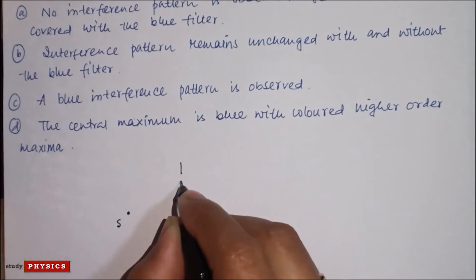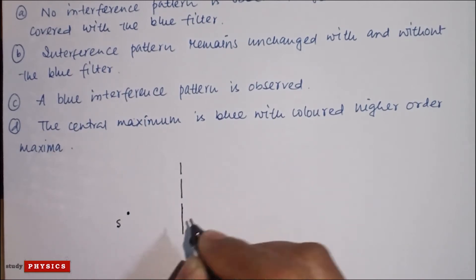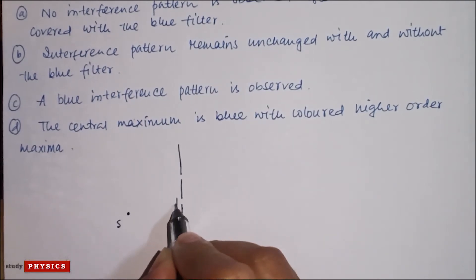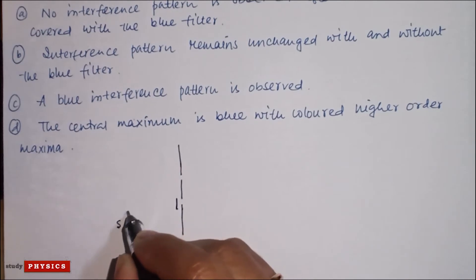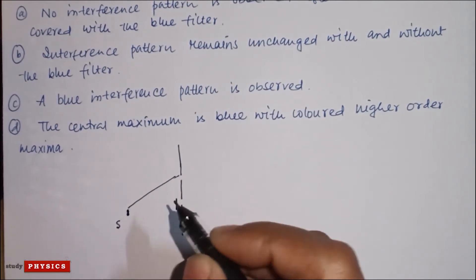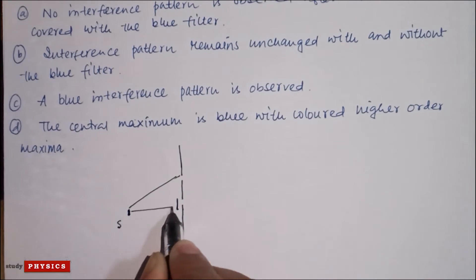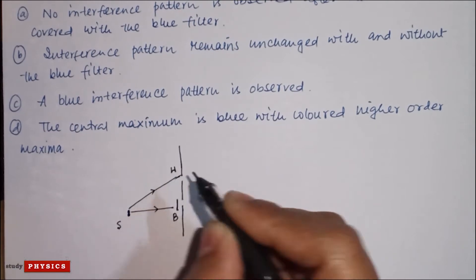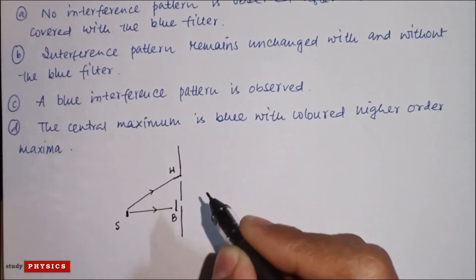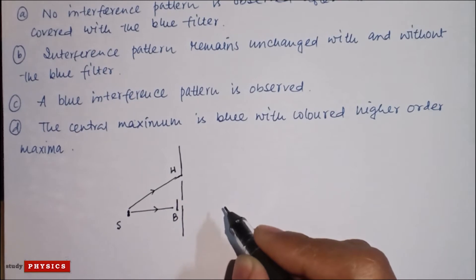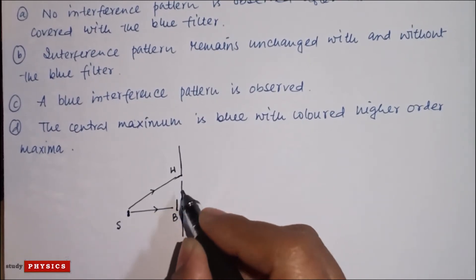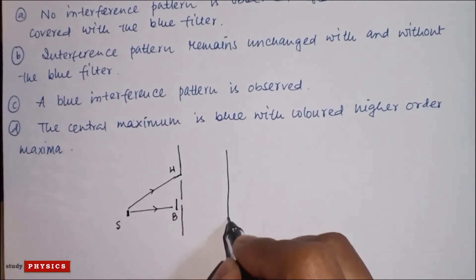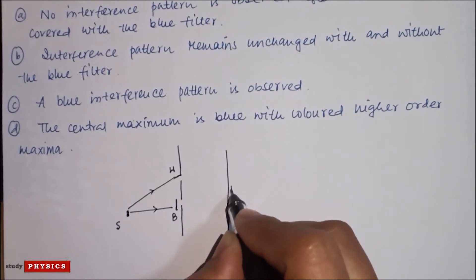One slit is covered with a blue filter. The white light source is going like this — so this is the blue filter and this is white light. To form an interference pattern, light from two slits should be of the same frequency and wavelength. So we will have a blue interference pattern on the screen.